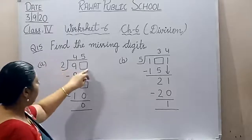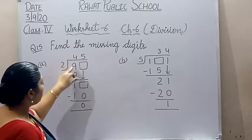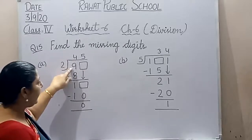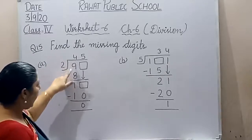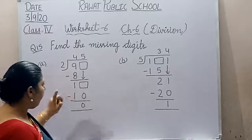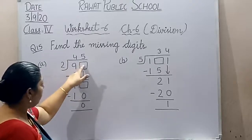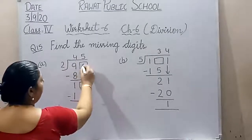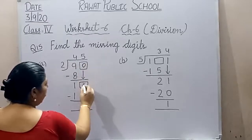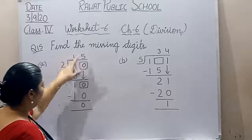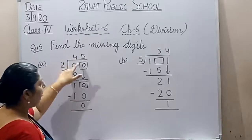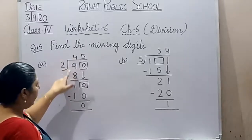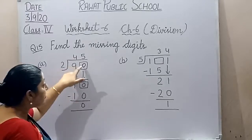Look — we need to divide by 2. See: 2 fours are 8. We go through it step by step: 2 fours are 8. Because in the table of 2, 9 doesn't come — 8 comes, which is less than 9. So 9 minus 8 is equal to 1. Now, which number should come here so that 2 times something equals 10? The answer is 0. We put 0 here, making it 10. So 2 fives are 10.